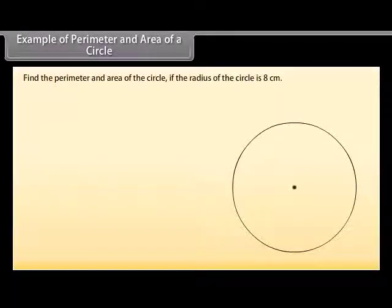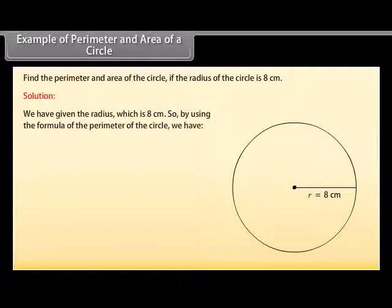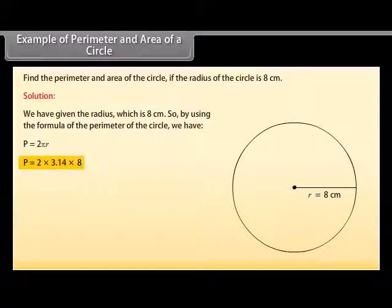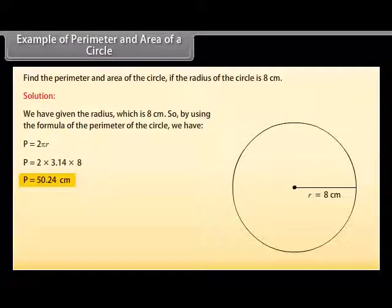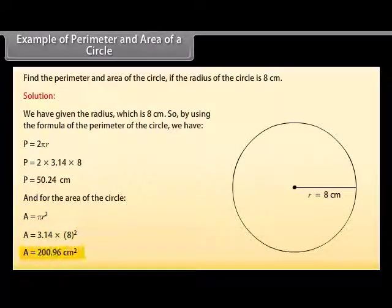Example 2: Find the perimeter and area of the circle if the radius is 8 cm. We have the radius = 8 cm. Using the formula: P = 2πR = 2 × 3.14 × 8 = 50.24 cm. For the area: A = πR² = 3.14 × 8² = 200.96 cm².